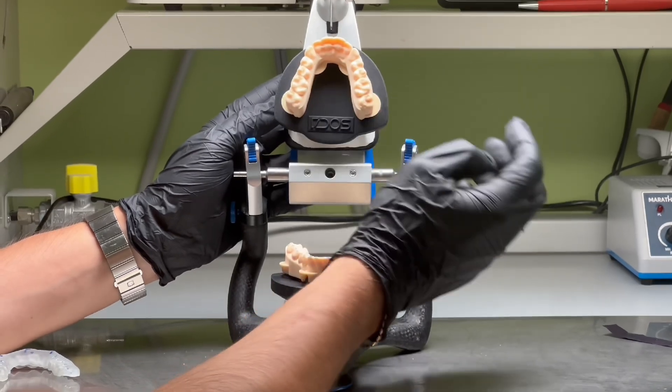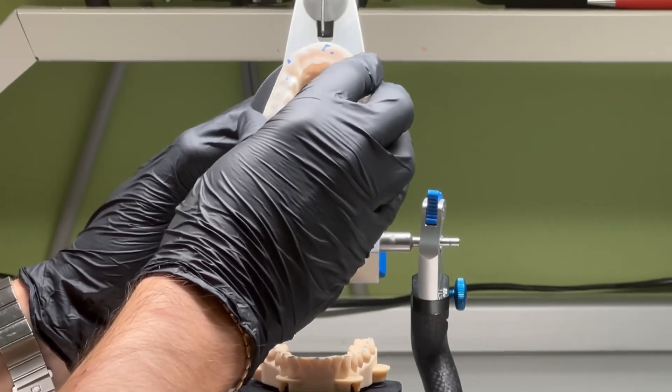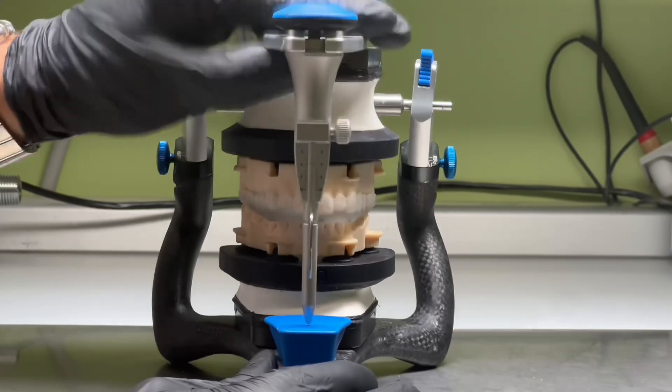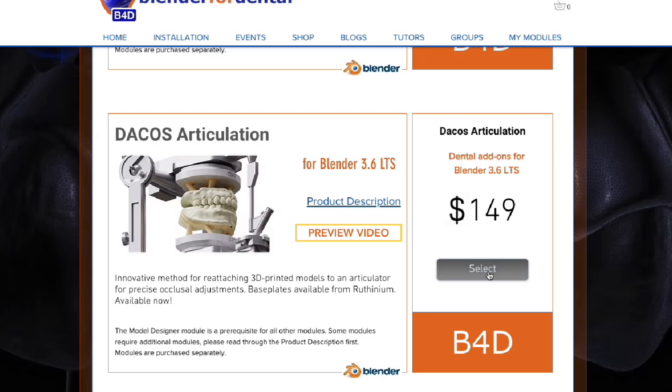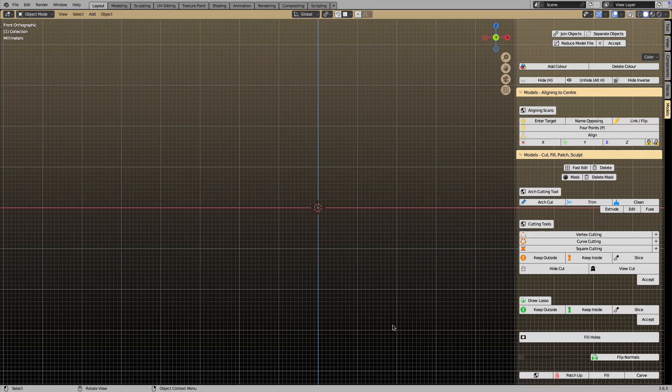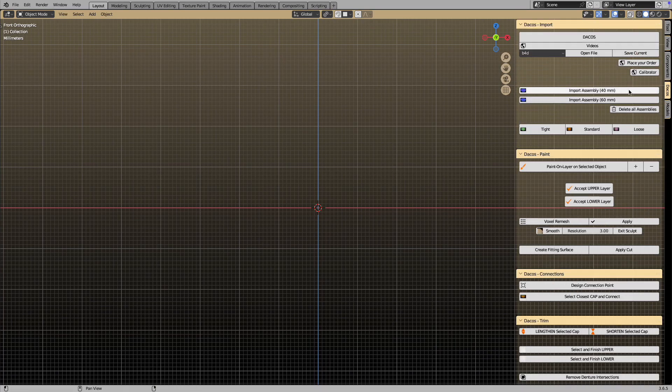In this video tutorial, we will guide you through the installation of the Dacos plate into your articulator. After purchasing the Dacos module on the Blender for Dental website, you can download the Dacos Master Calibrator STL files.